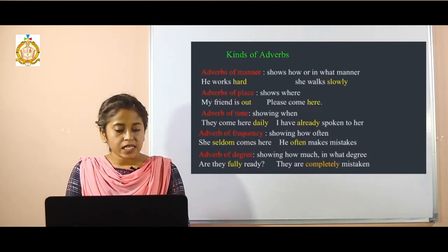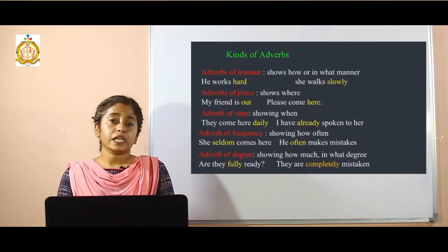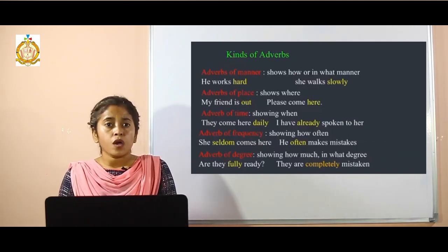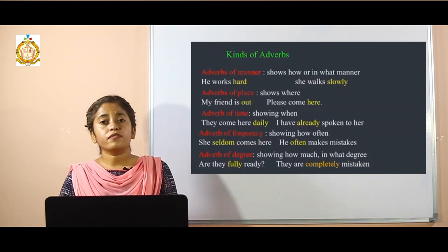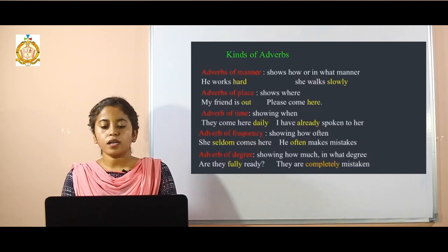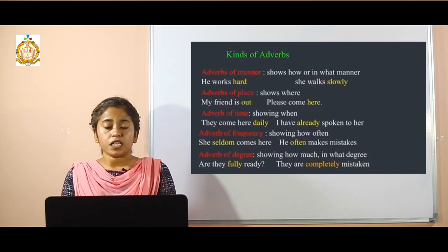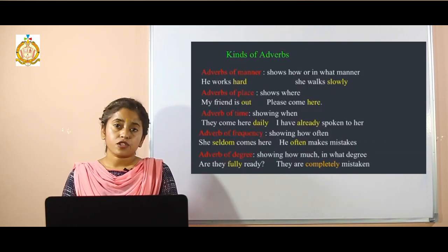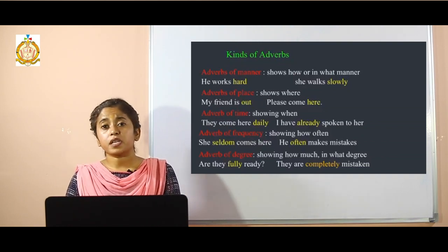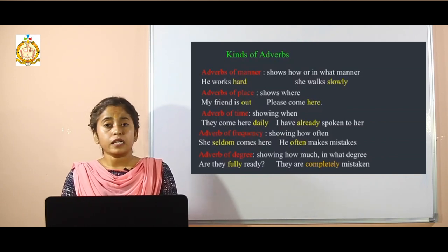Next is adverb of frequency. Adverb of frequency tells you how often an action has been performed — whether it is done on a regular basis or seldom. For example: 'She seldom comes here' or 'He often makes mistakes.' Next comes adverb of degree, which shows how much of an action has been done or to what particular extent it has been performed. For example: 'Are they fully ready?'